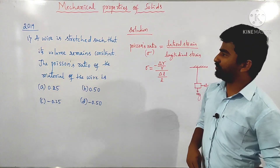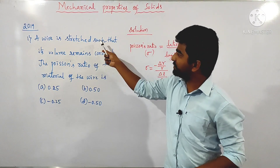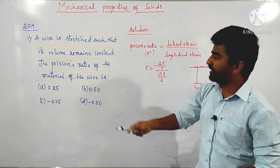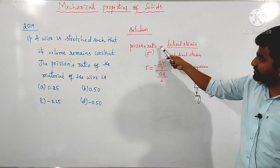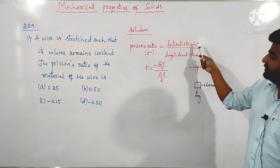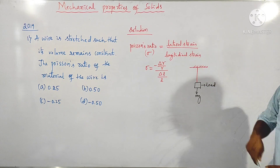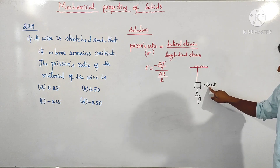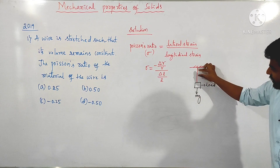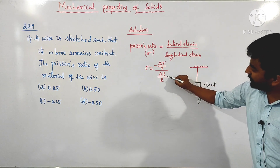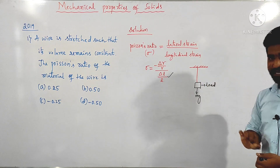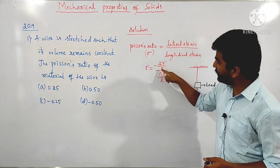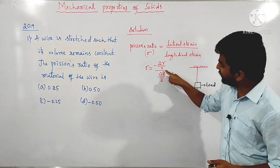We move on to the next question, asked in 2019. A wire is stretched such that its volume remains constant. The Poisson's ratio of the material of the wire is — they are given four options. Poisson's ratio is nothing but the ratio of lateral strain to the longitudinal strain. This is the wire attached to the rigid support. When a load is attached, the wire stretches: the length of the wire increases and the diameter of the wire decreases. So Poisson's ratio is the fractional decrease in the diameter of the wire to the fractional increase in the length of the wire.